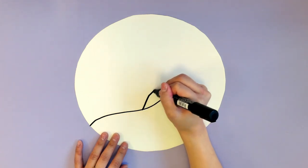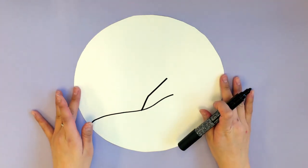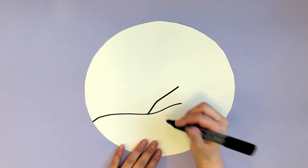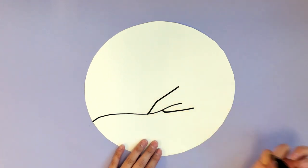From there, we're going to turn this wavy line into a Y by adding another branch. And now I'll add another one underneath. And from there, we're going to add some mini Ys.